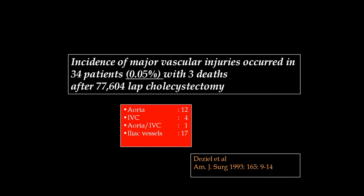Major vascular injuries occurred in 34 patients with 3 deaths after 77,000 laparoscopic cholecystectomies, as reported in the American Journal of Surgery in 1993, with aortic and iliac vessel injuries being the most common types. Personally, I have seen two such cases — one iliac vessel and one aortic injury — while training juniors over the last 25 years. We should not think this will never happen; we must take all precautions to avoid such a major catastrophe in anyone's career as a laparoscopic surgeon.